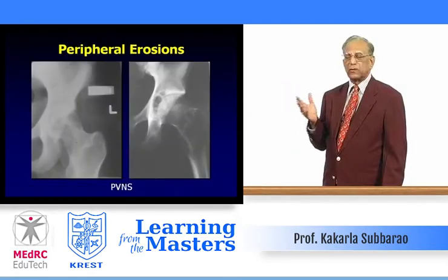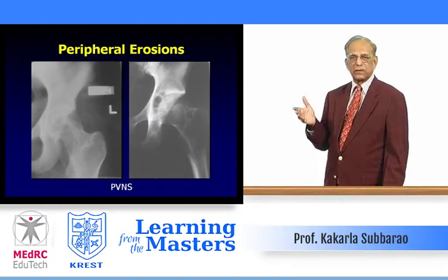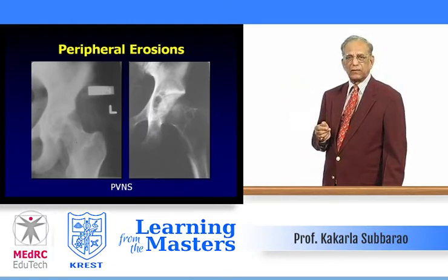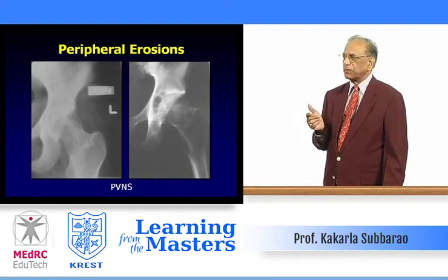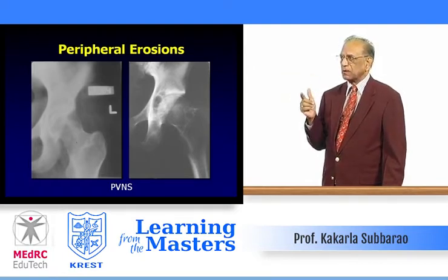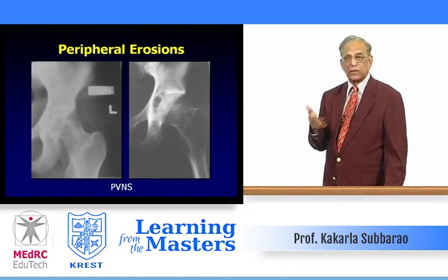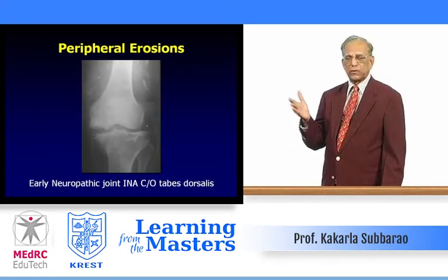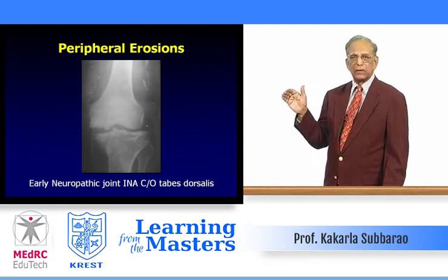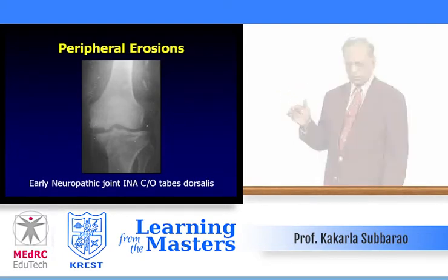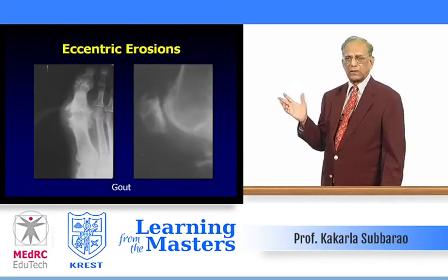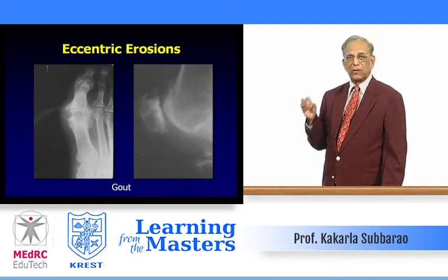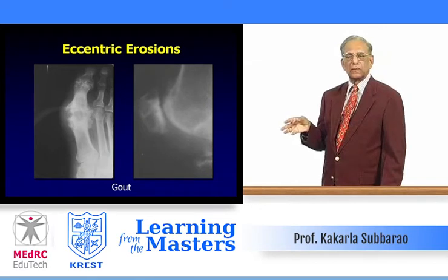In pigmented villonodular synovitis, peripheral erosions may extend into the neck of the femur — looking at the left hip, you see marked erosions almost resembling a giant cell tumor. In neuropathic joints, peripheral erosions also occur apart from eburnation, with eccentric erosions occurring early on. Eccentric erosions occur in gout due to the gouty tophus profile.